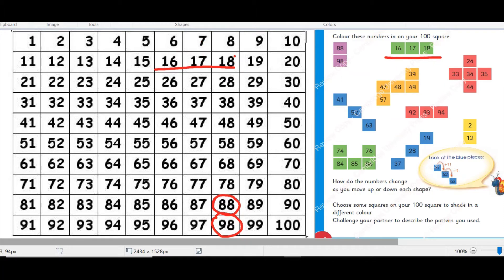One number is increasing at right hand side and 10 numbers are increasing when you go downwards. Like if it is 13 and 23, 13 plus 10 is 23. You increase 10 numbers when you go downwards on a hundred square.